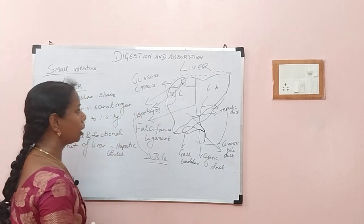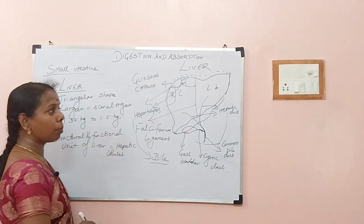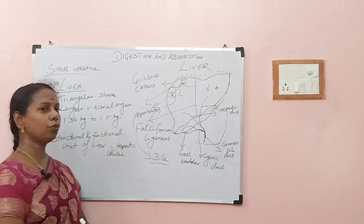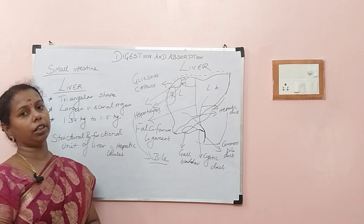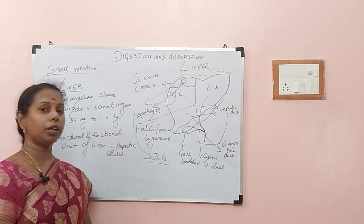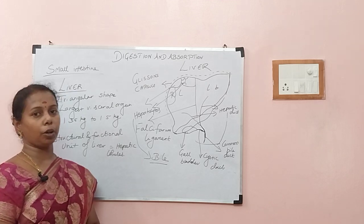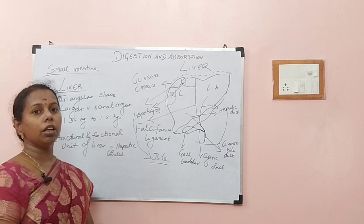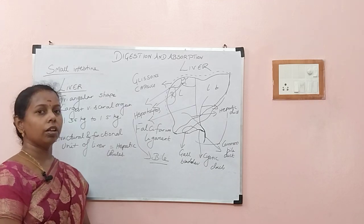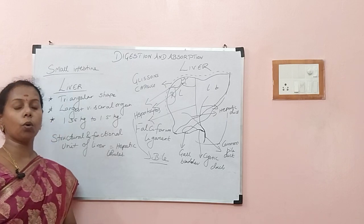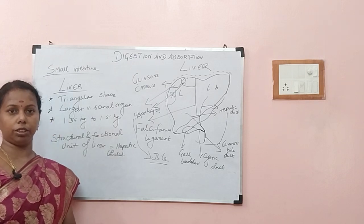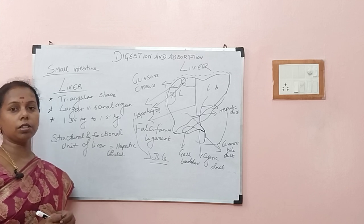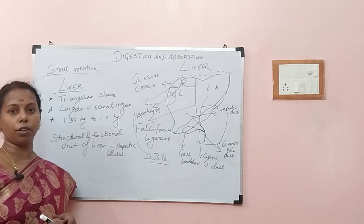Please remember: the duct in the liver is called the hepatic duct; in the gallbladder, we have the cystic duct; and these two join and open as the common bile duct. We produce bile only in the liver. Please post your answers in the comment box: where do you find the liver — upper abdomen or lower abdomen? And can you name a digestive juice that has no enzyme? Thank you all for watching. Bye-bye.